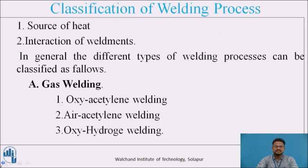Coming to the classification of welding process. There are more than 30 types of welding methods used in the engineering industry. The welding methods can be classified based on various factors. The two important bases of classification are: first, source of heat; and second, interaction of weldments. In general, the different types of welding process can be classified as follows.